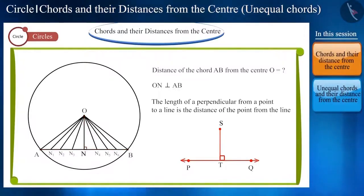For example, in this circle, the distance between center O and chord AB will be ON which is perpendicular to chord AB.